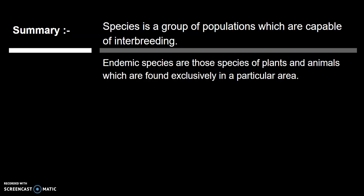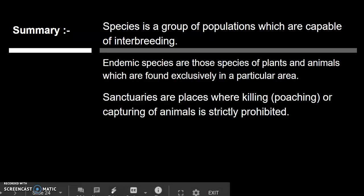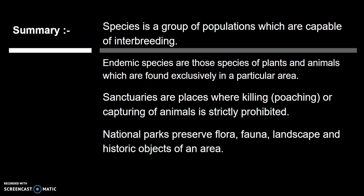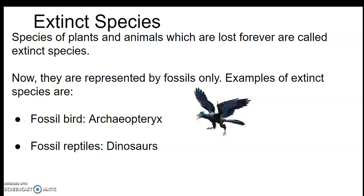There are some protective areas for conservation of biodiversity. Sanctuaries are places where killing, washing, or capturing of animals is strictly prohibited. National parks are those areas which preserve flora, fauna, landscape, and historic objects of an area. Today we will study about extinct species.